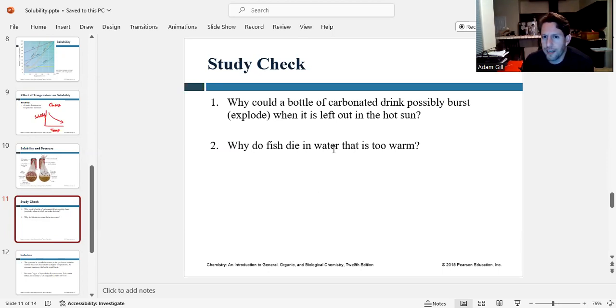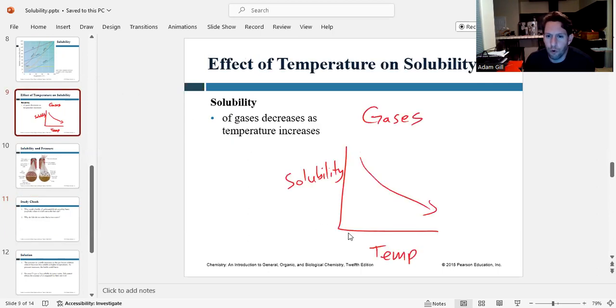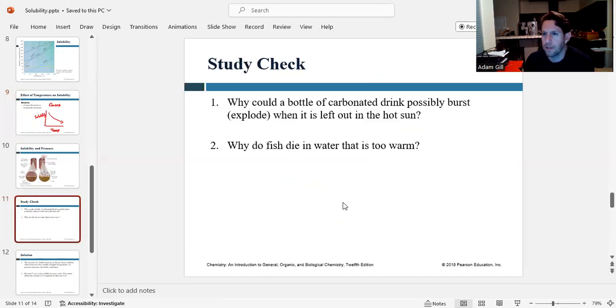Now why do fish die when water is too warm? Well, fish breathe oxygen that's dissolved in the water. And so warmer water has less oxygen in it. So there's actually more oxygen in cold water. So oceans and rivers can support more life than a warm pond can because there's more oxygen in cold water.